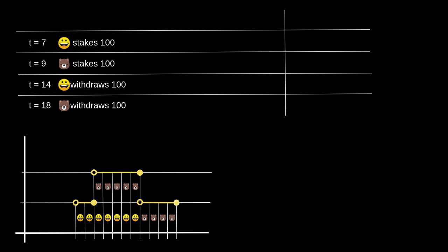The easiest way to understand how this algorithm works is to plug in some numbers. Let's start by tracking `elbt`, the total amount of tokens staked in the contract. At t equals 7, Alice stakes 100 tokens, but `elbt` is updated after t equals 7, so at that point it is still 0. At t equals 9, Bob stakes his 100 tokens; the total is updated after t equals 9, so at this point we have 100 tokens staked from Alice.